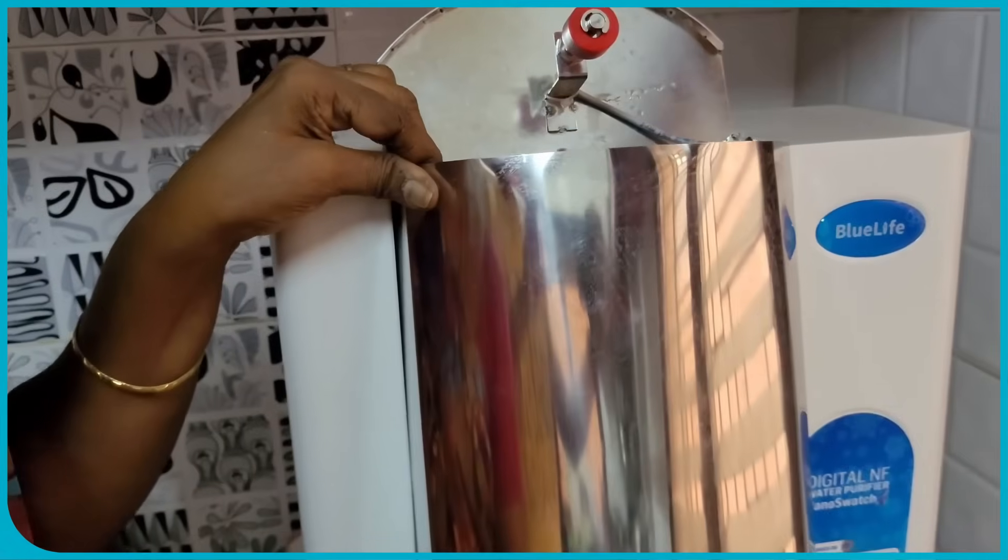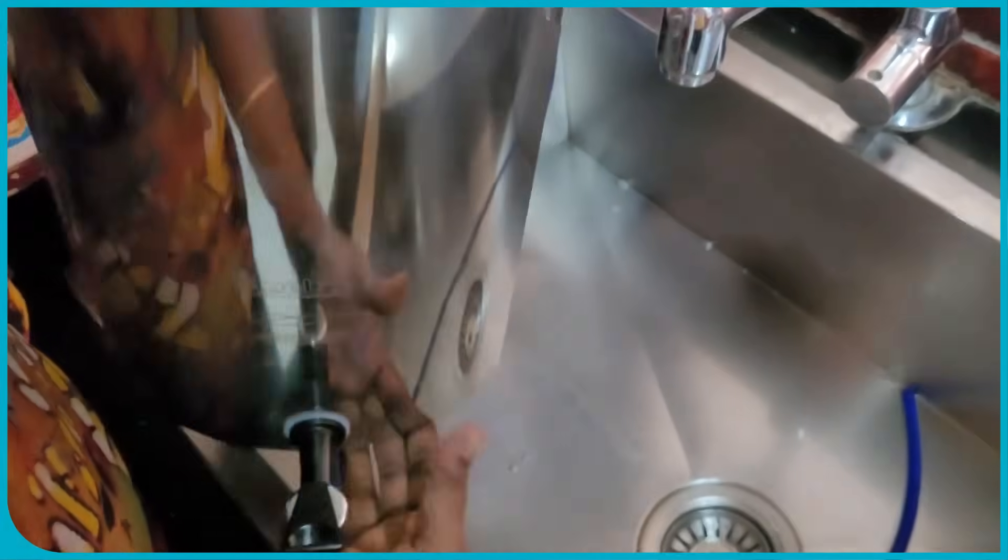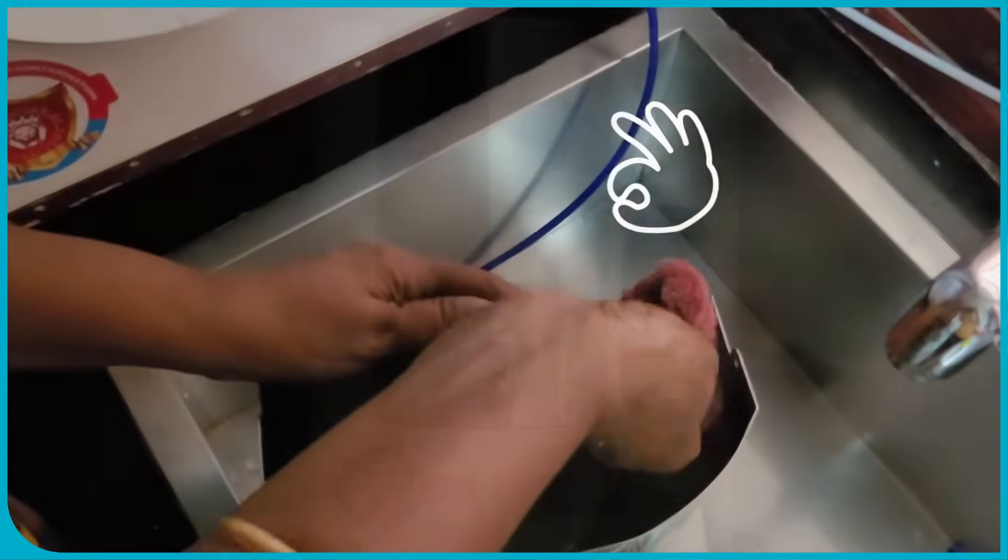How to clean the detachable tank? Turn off power and water supply. Before beginning, turn off the power and the water supply to the purifier. Detach the tank.